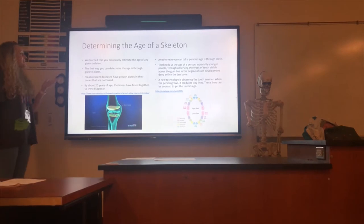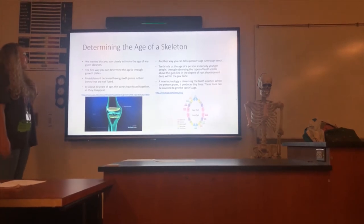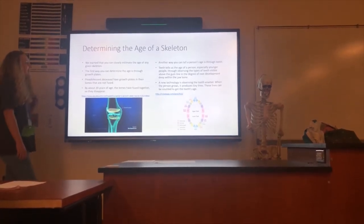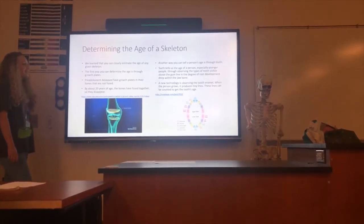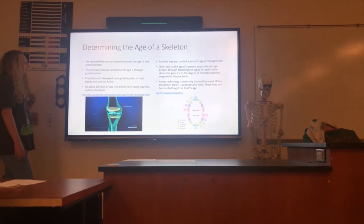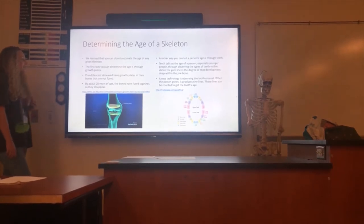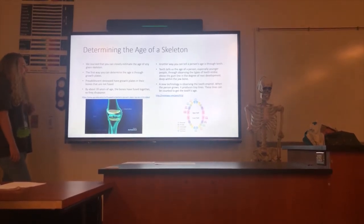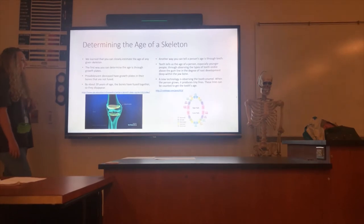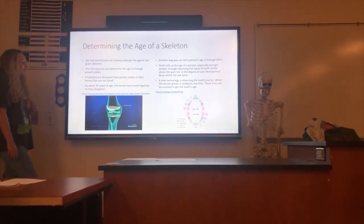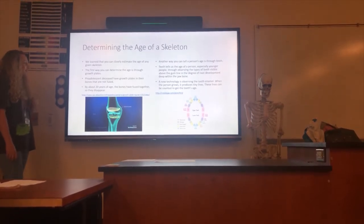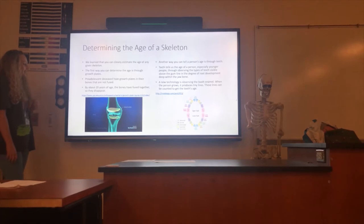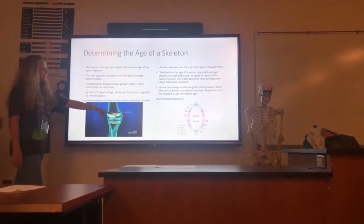Determining the age of the skeleton. We learned that you can closely estimate the age of any given skeleton. The first way you can determine age is through growth plates. Pre-adolescent deceased have growth plates in their bones that are not fused. By about 20 years of age, the bones have fused together and the growth plates disappear. You can see this picture of the growth plate.